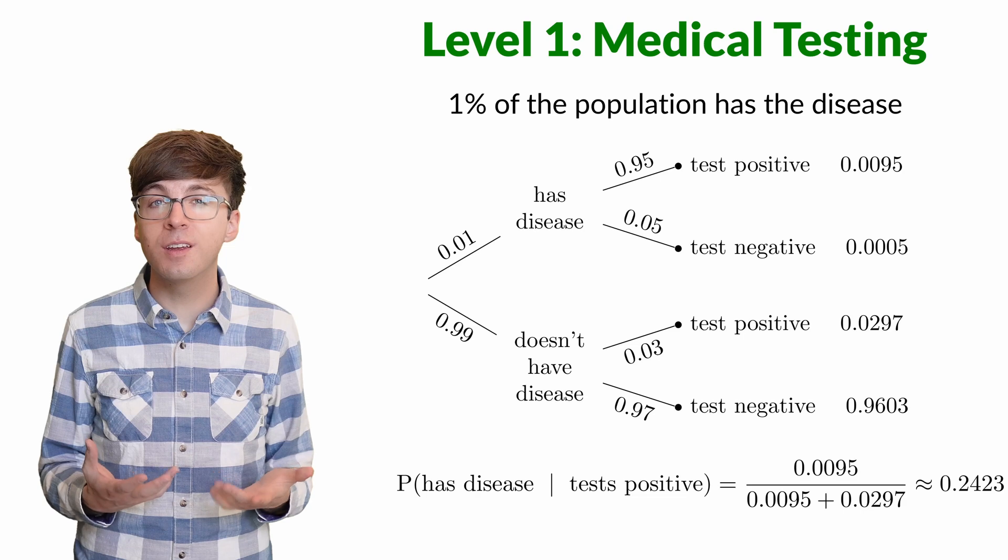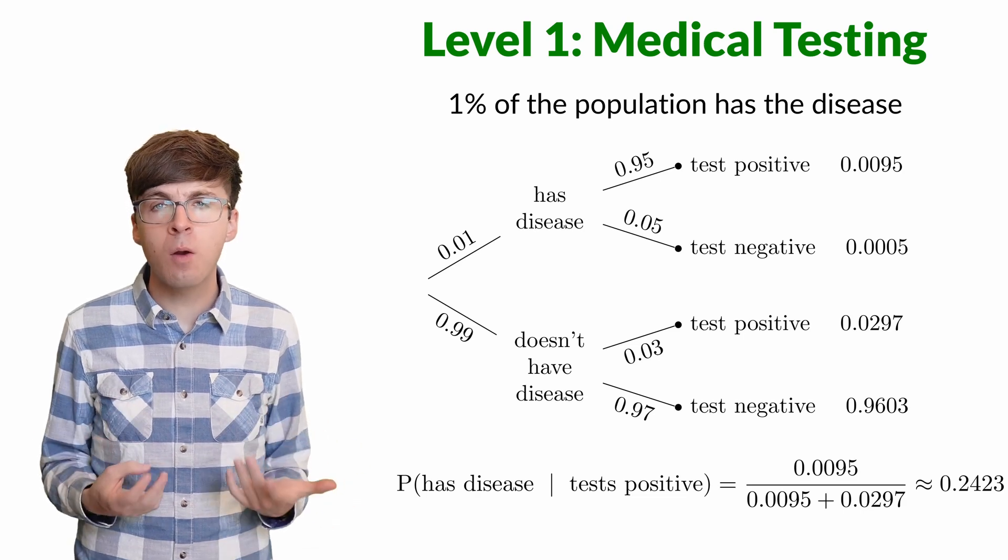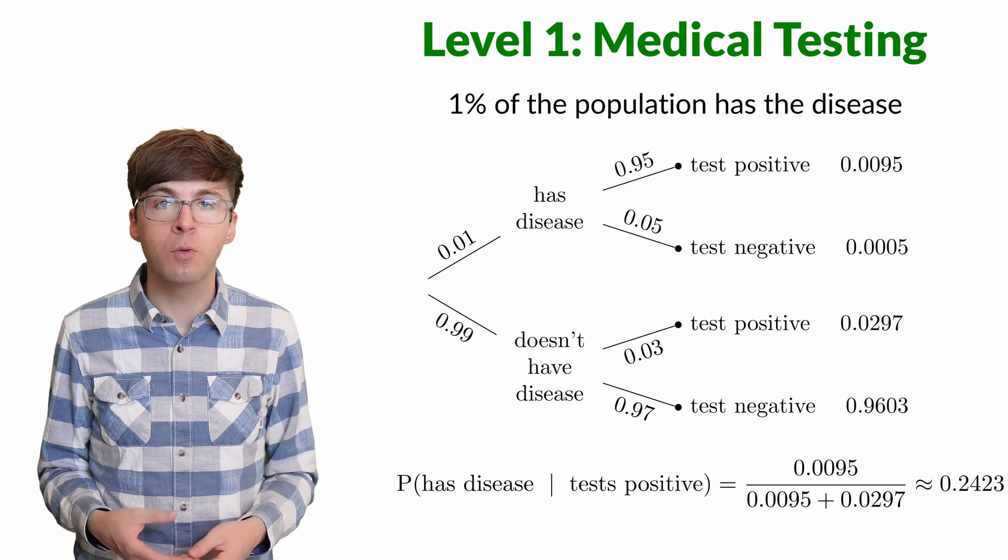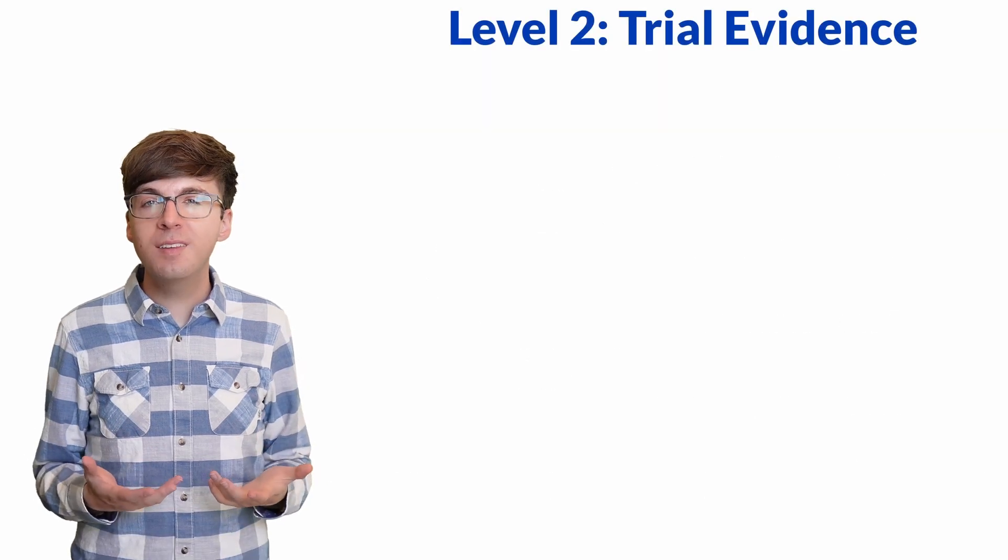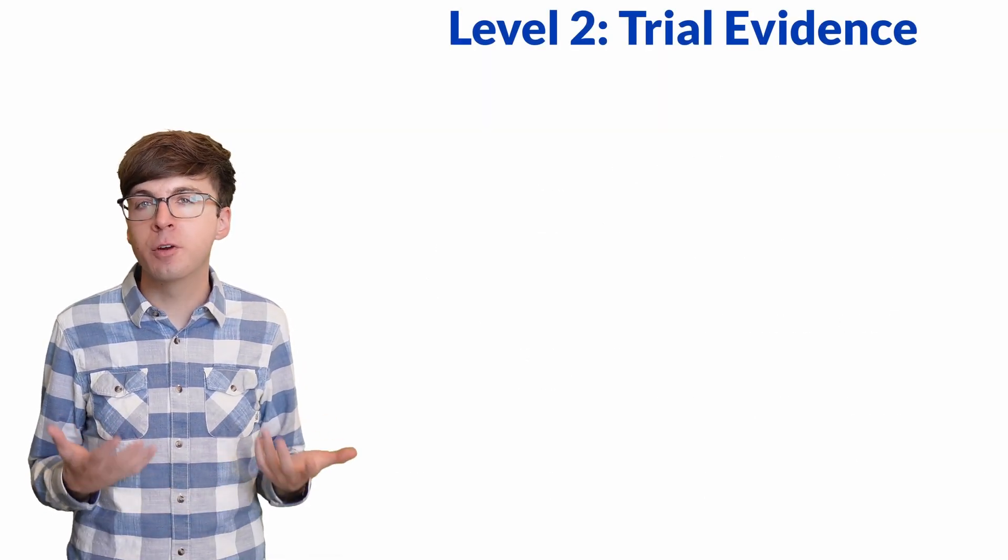This method of calculation is called Bayes Rule, and it's a powerful way for us to update our beliefs based on new evidence. For level 2, let's see how Bayes Theorem applies to criminal justice.